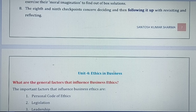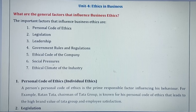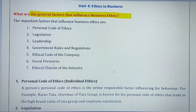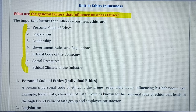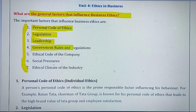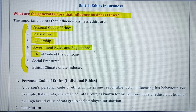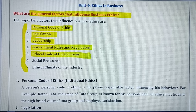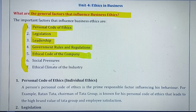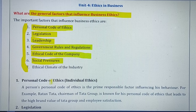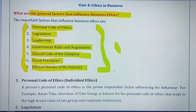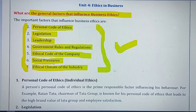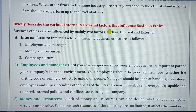Unit 4 is Ethics in Business. The important question here is: what are the general factors that influence business ethics? These factors include: personal code of ethics, legislation, leadership, government rules and regulations, ethical code of the company, standards, social pressures, and the ethical climate of the industry as a whole. All these factors influence business ethics and need to be explained properly.